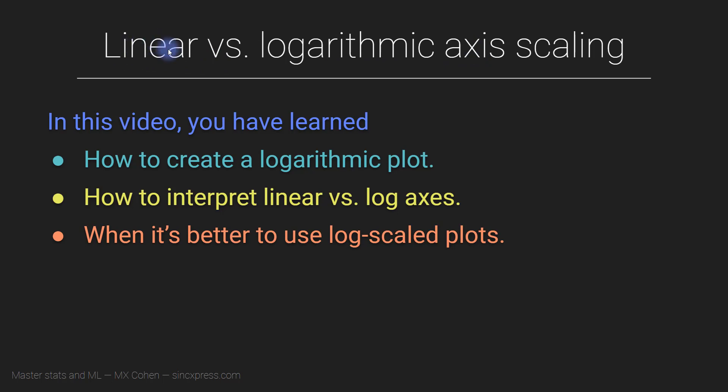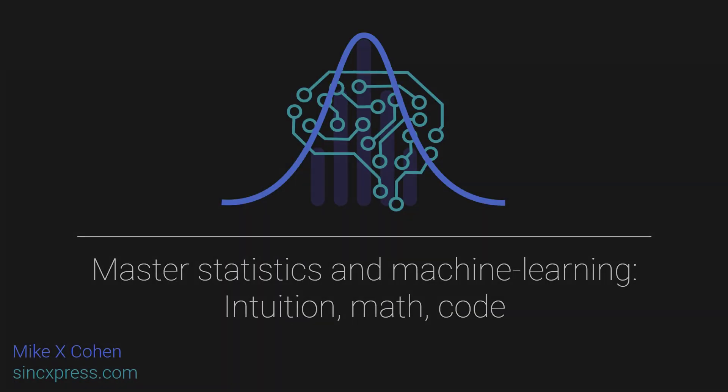So there you go, linear versus logarithmic axis scaling. The key difference is that with linear scaling, the tick marks are defined by addition, and with logarithmic scaling, the tick marks are defined by multiplication. In general, it's better to use linear plots because they're easier to read. And logarithmic plots should be used when it's most appropriate for that particular type of data.